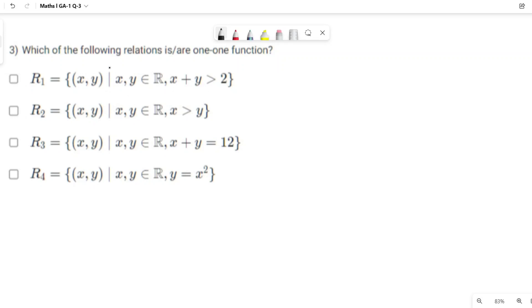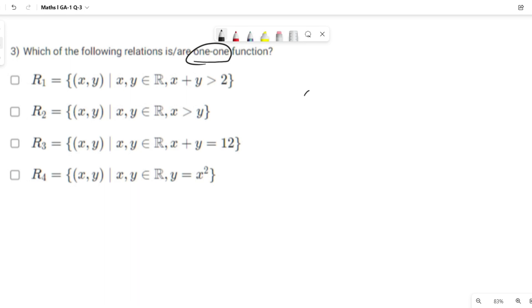Third question: which of the following relations is or are 1-1 function? So first of all, what is a 1-1 function? For 1-1 function, let us take two sets, set A and set B. Relation is from set A to B.